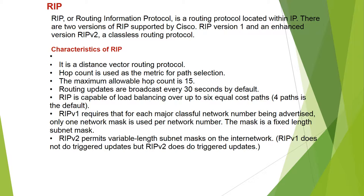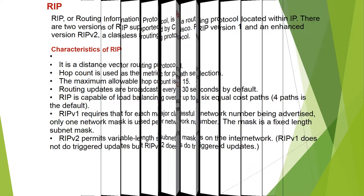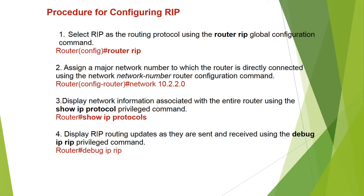RIP version 2 permits variable-length subnet masks on the internetwork. RIP version 1 does not support triggered updates, but RIP version 2 does support triggered updates.